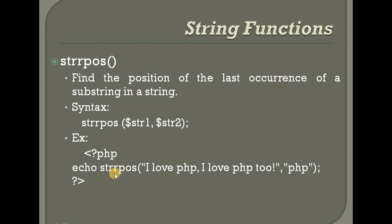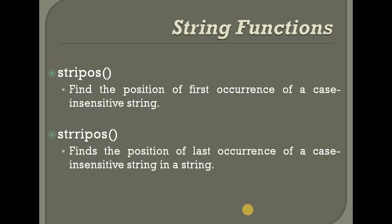Example: strrpos with 'I love PHP' and 'I love PHP2'. The first string and searching for PHP2, which is the last occurrence. The position is around the 19th or 20th position. So, strrpos returns the last occurrence position.